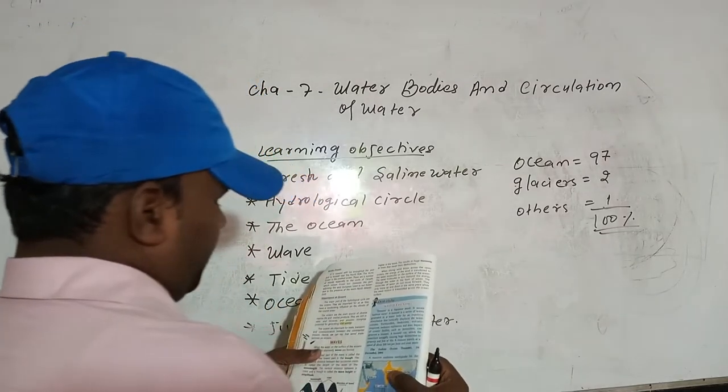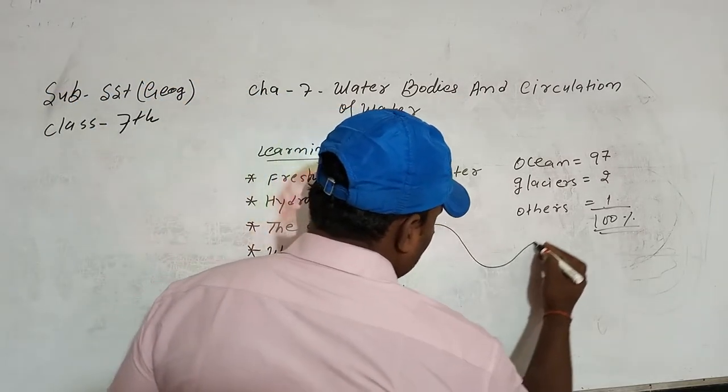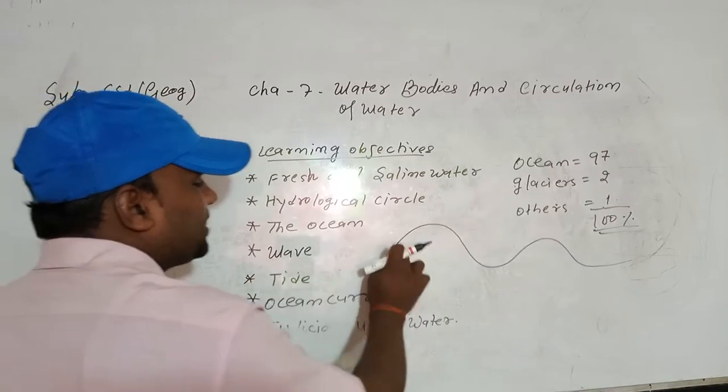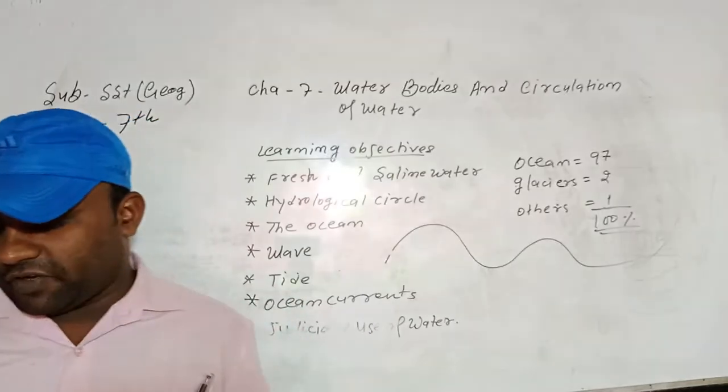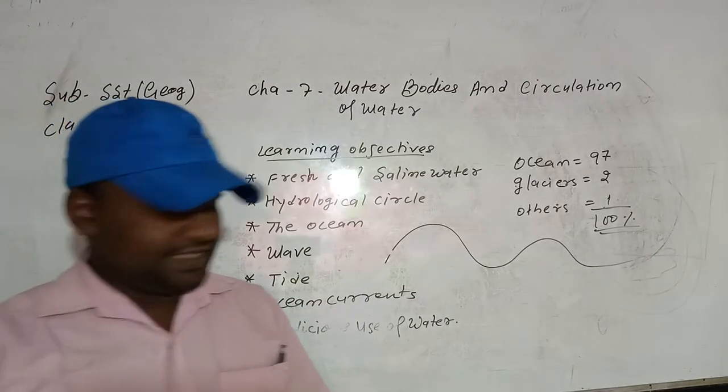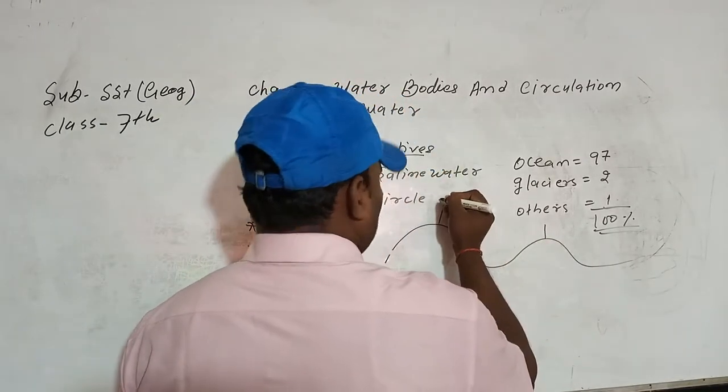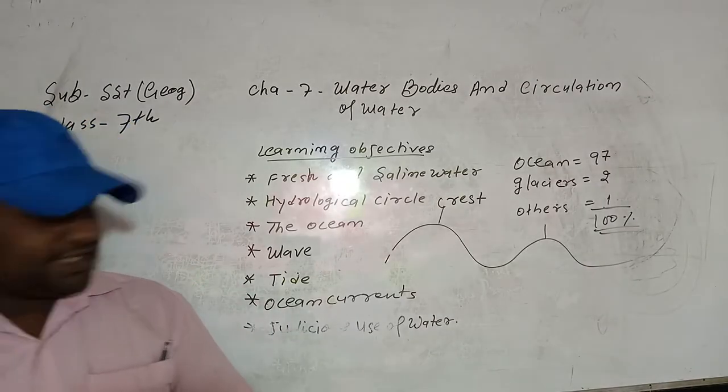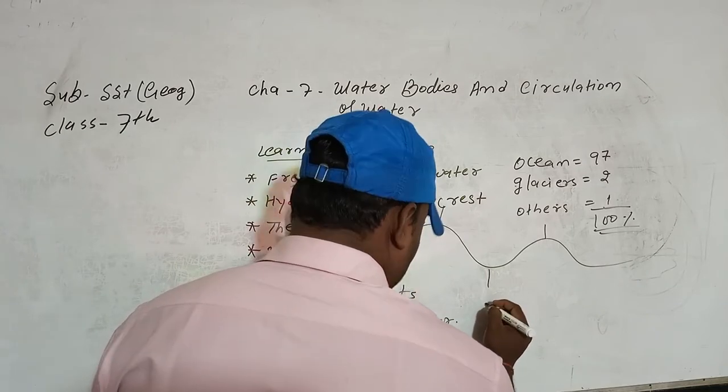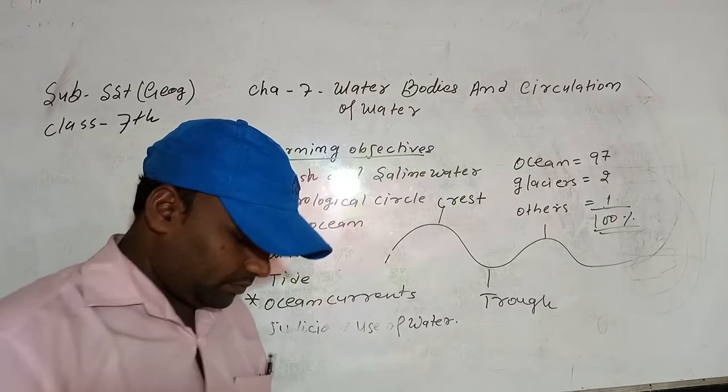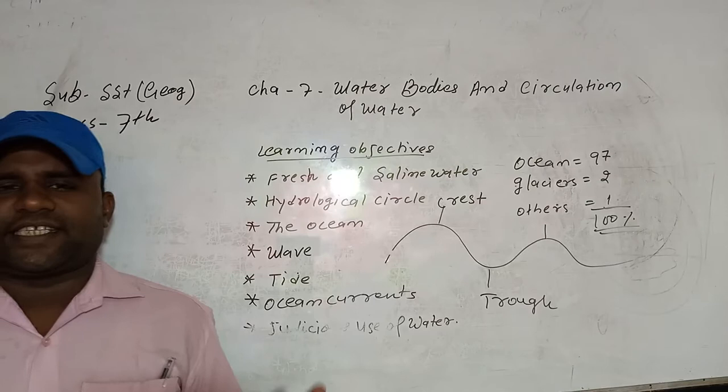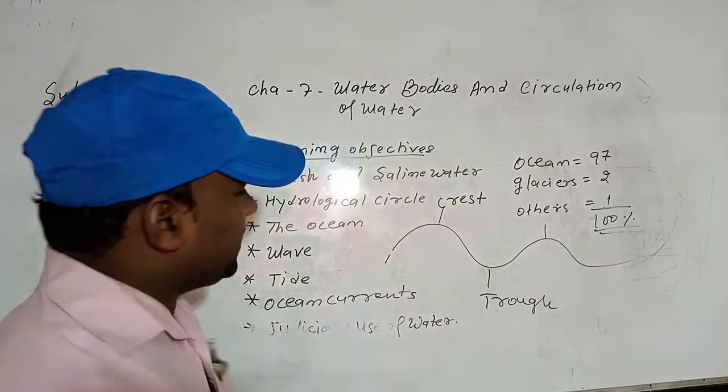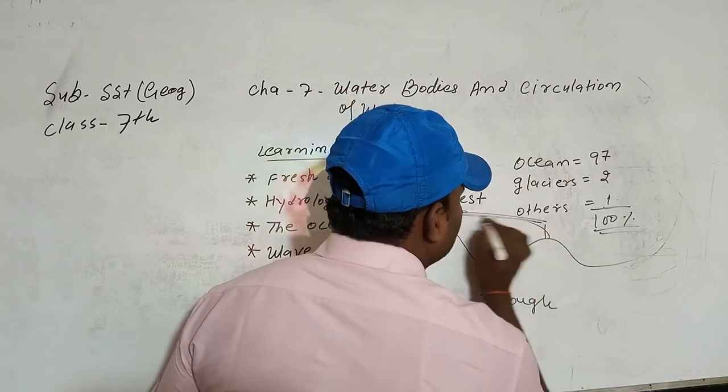Next point, wave. The water on the surface of the ocean rises and falls alternately. This form of water is known as wave. The highest part of the wave is called crest. And the lowest part is trough. The horizontal distance between two successive crests is called the length of the wave or wave length.